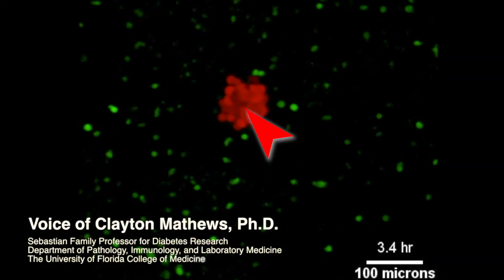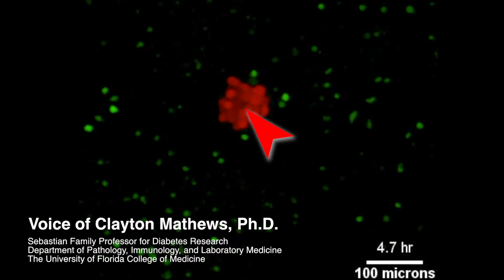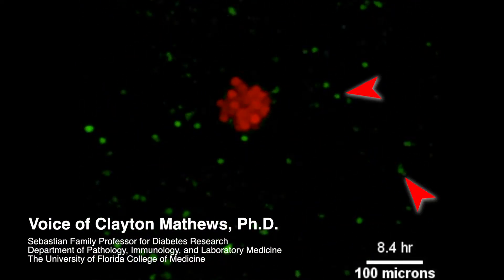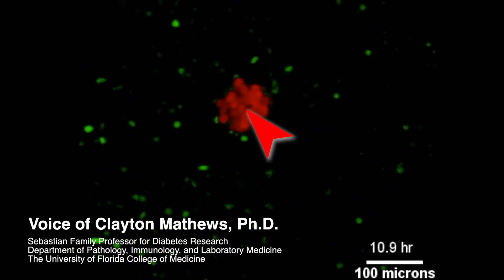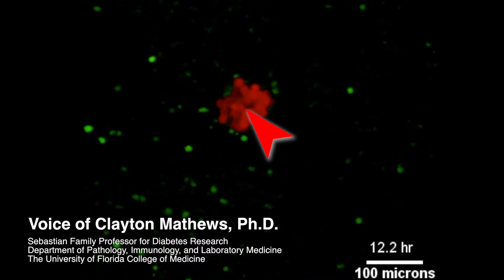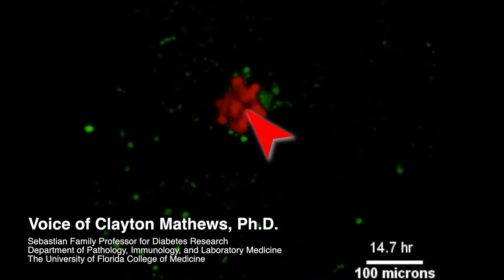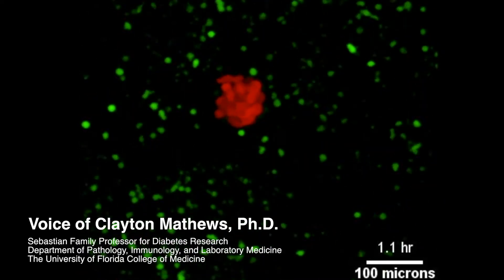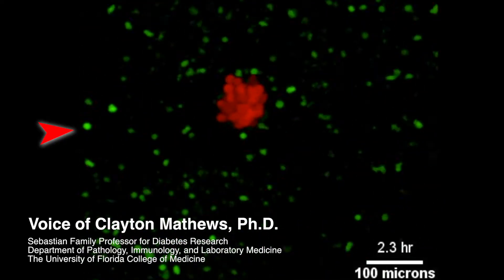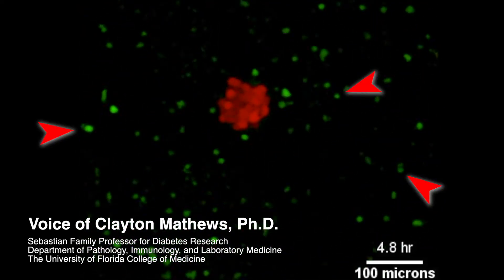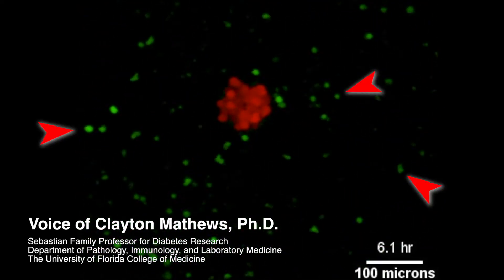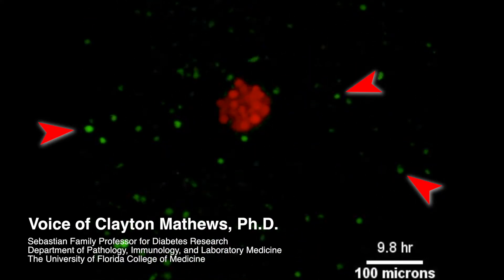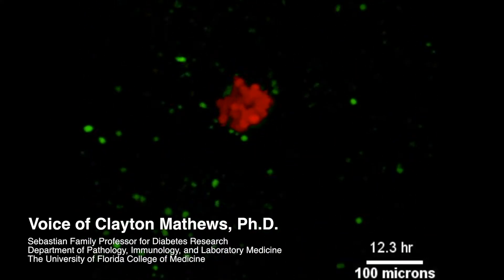Beta cells are in red — that beta cell cluster in the center — and the T cells are green. The beta cells are red based on a dye that stains healthy, living cells, and the T cells are green because they're expressing a bacterial protein, green fluorescence protein.